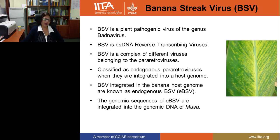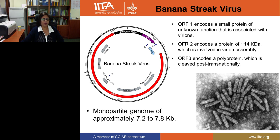I will give an example of the work we are doing with the banana streak virus. Banana streak virus is a plant pathogenic virus of the genus Badnavirus. It is a double-stranded DNA reverse transcriptase virus. There are different viruses belonging to the para-retroviruses. It is classified as an endogenous virus because they are integrated into the host genome, and once integrated they are called EBSV. The genomic sequences of EGBSV are integrated into the genomic DNA of the banana.